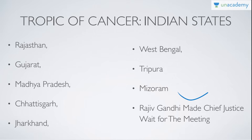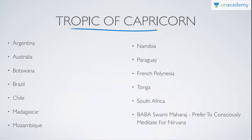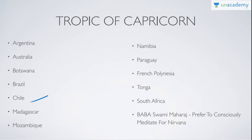Finally, the Tropic of Capricorn passes through South America, the South Africa region, and Australia, along with some Pacific islands like Polynesia. The countries are: Argentina, Australia, Botswana, Brazil, Chile, Madagascar, Mozambique, Namibia, Paraguay, French Polynesia, South Africa, and Tonga.